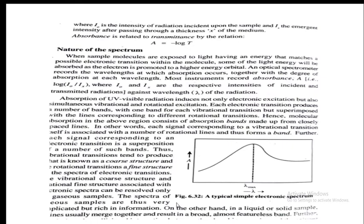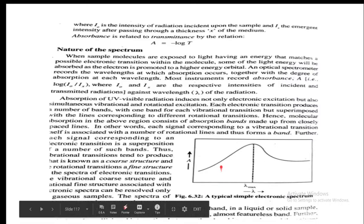Now let us discuss the nature of the absorption spectrum. Absorption bands are plotted with absorbance (or epsilon) on the y-axis and wavelength lambda on the x-axis. We can see a peak in the graph, corresponding to maximum absorption.